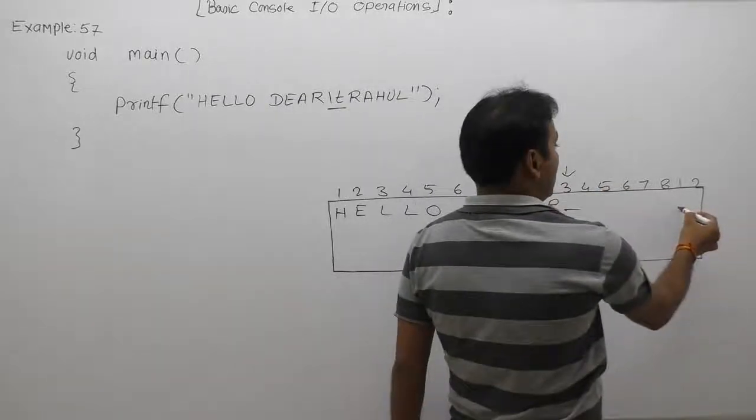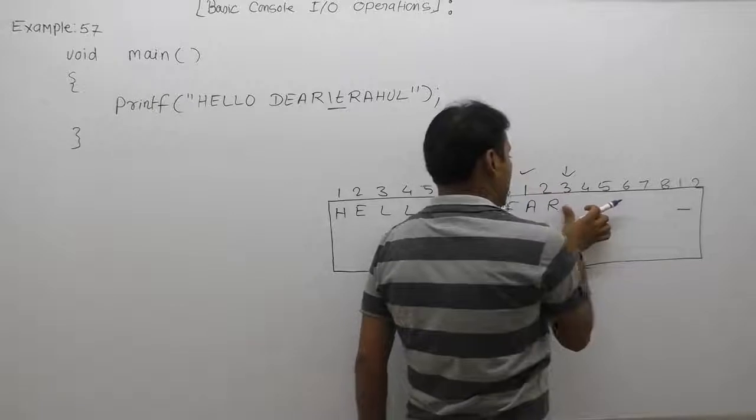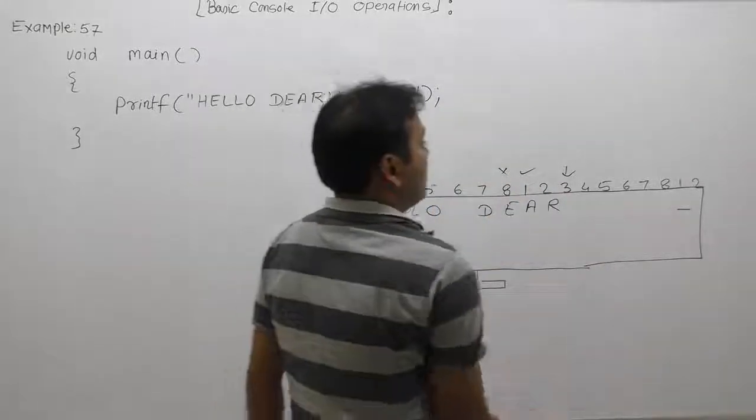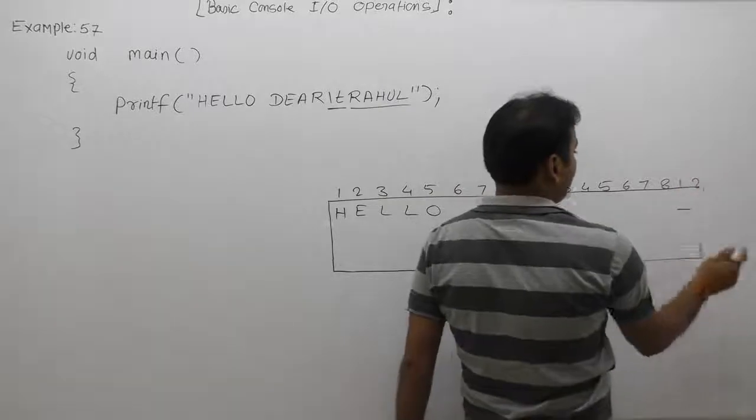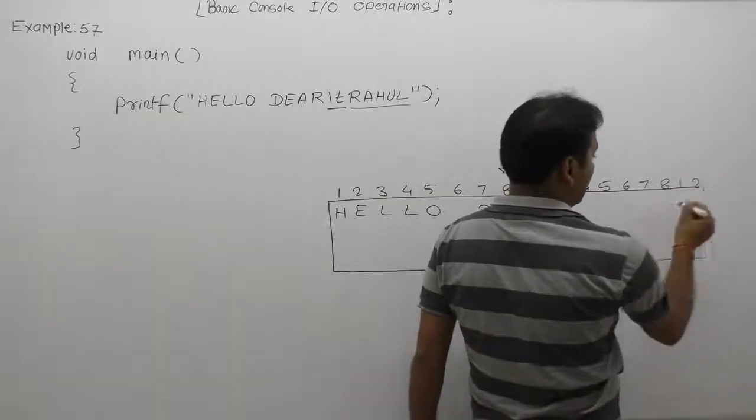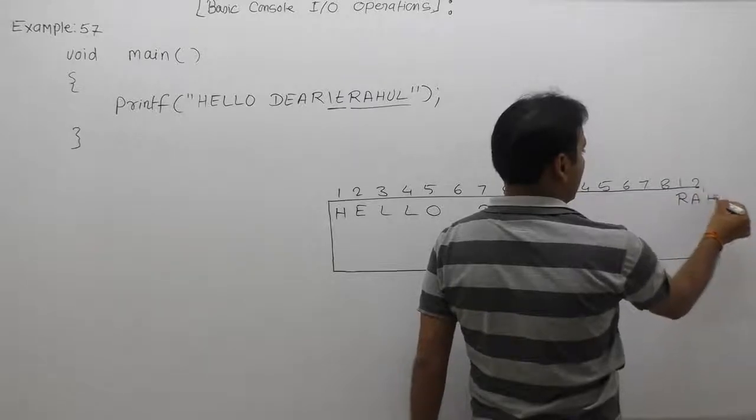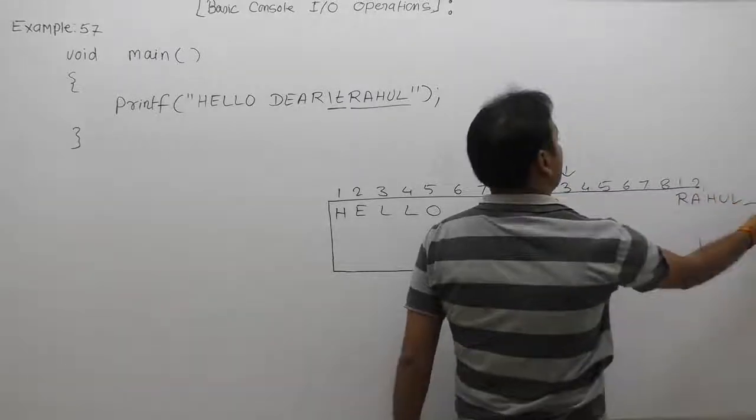After that place onward, it will again paint the message as 'Rahul'. In that place it will display R-A-H-U-L, then the cursor will be on that position.